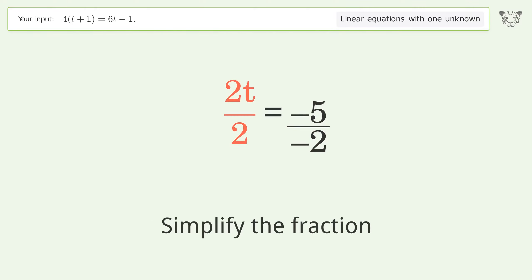Simplify the fraction. Cancel out the negatives. And so the final result is t equals 5 over 2.